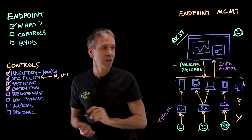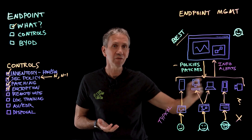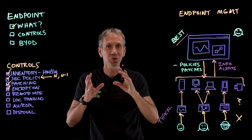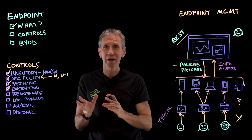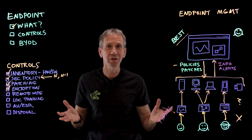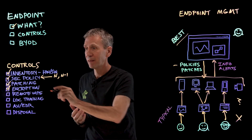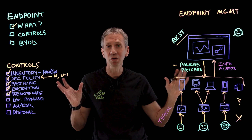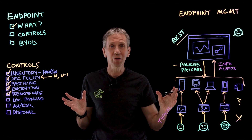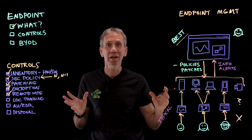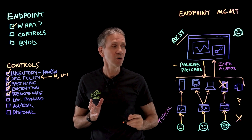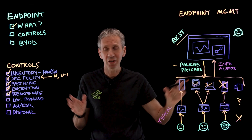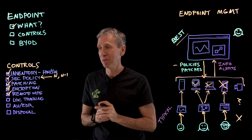An encryption policy is also important. Any device that can hold data — which is probably all of them — should have an encryption policy so that if the device is lost or stolen, nobody can get any information off of it because all the data is encrypted. Remote wipe capability is another must. In the case a mobile device goes missing, it would be really useful to automatically wipe all the data on that device remotely.